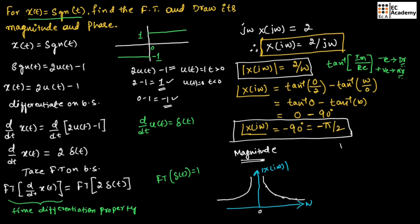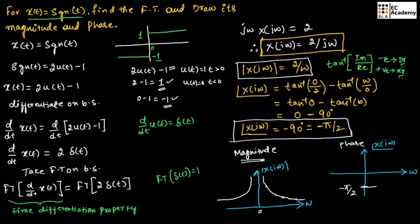Now let us plot the phase. Again, take ω on the x-axis and plot the phase of X(jω). The phase value obtained is for positive values of ω. For ω greater than 0, we get minus π/2. For negative values of ω, it will be plus π/2. This is the phase plot of the signum function.